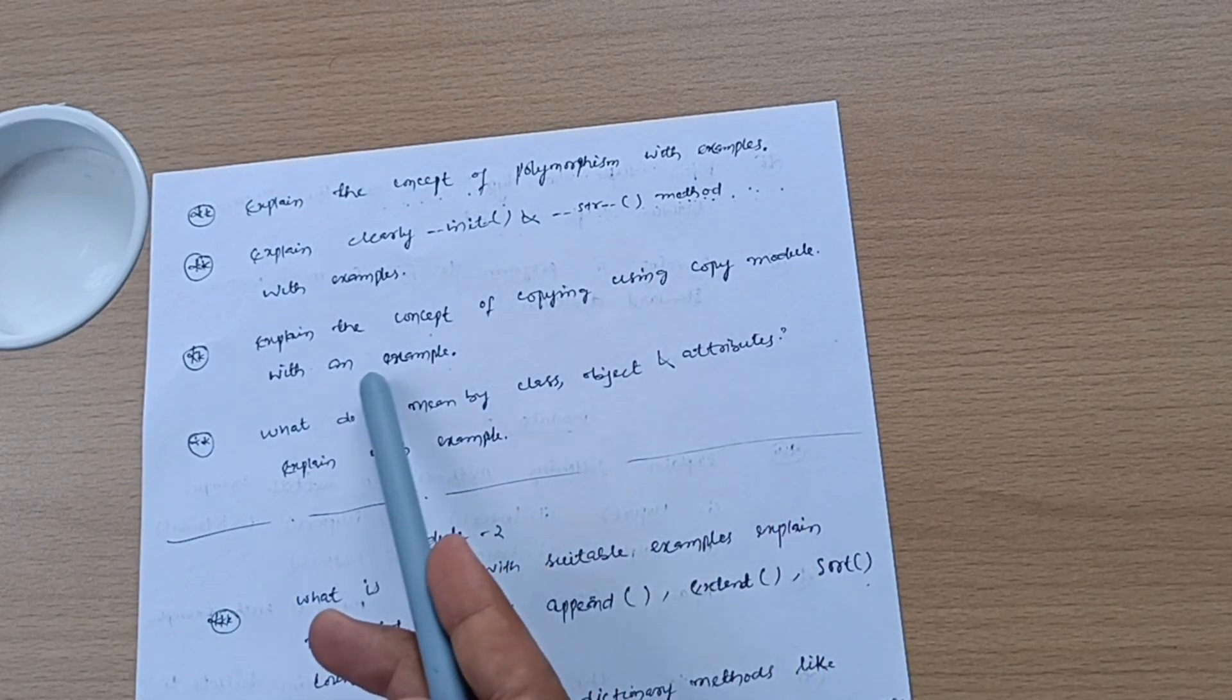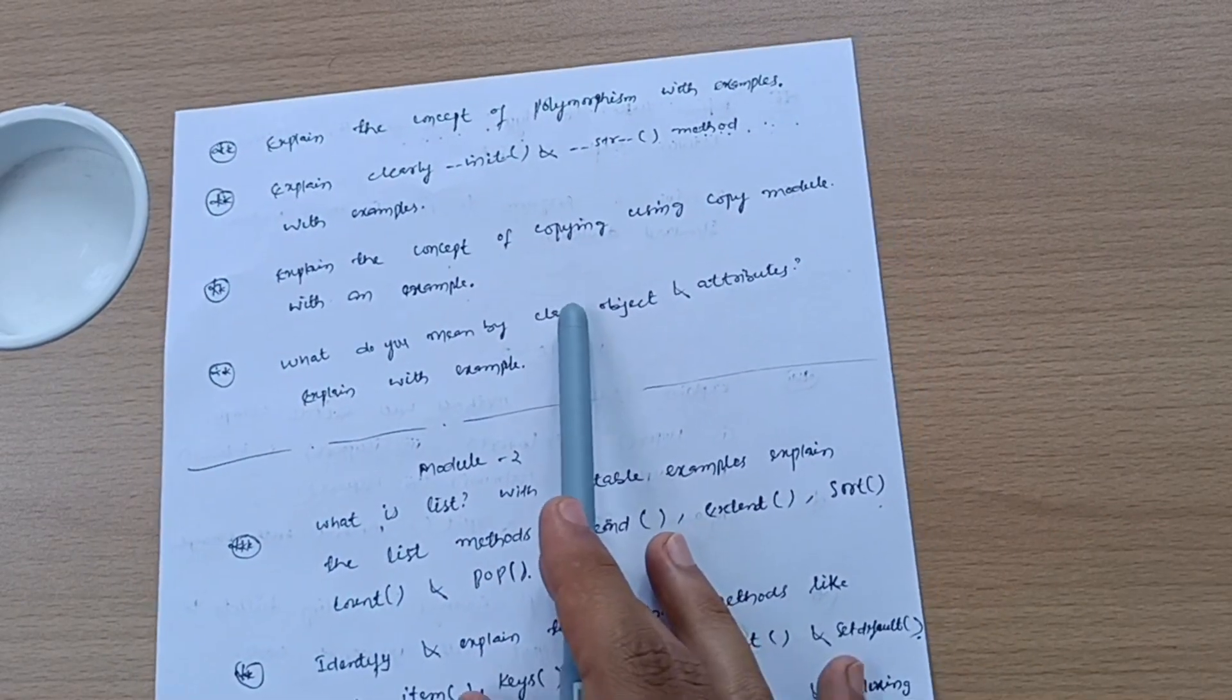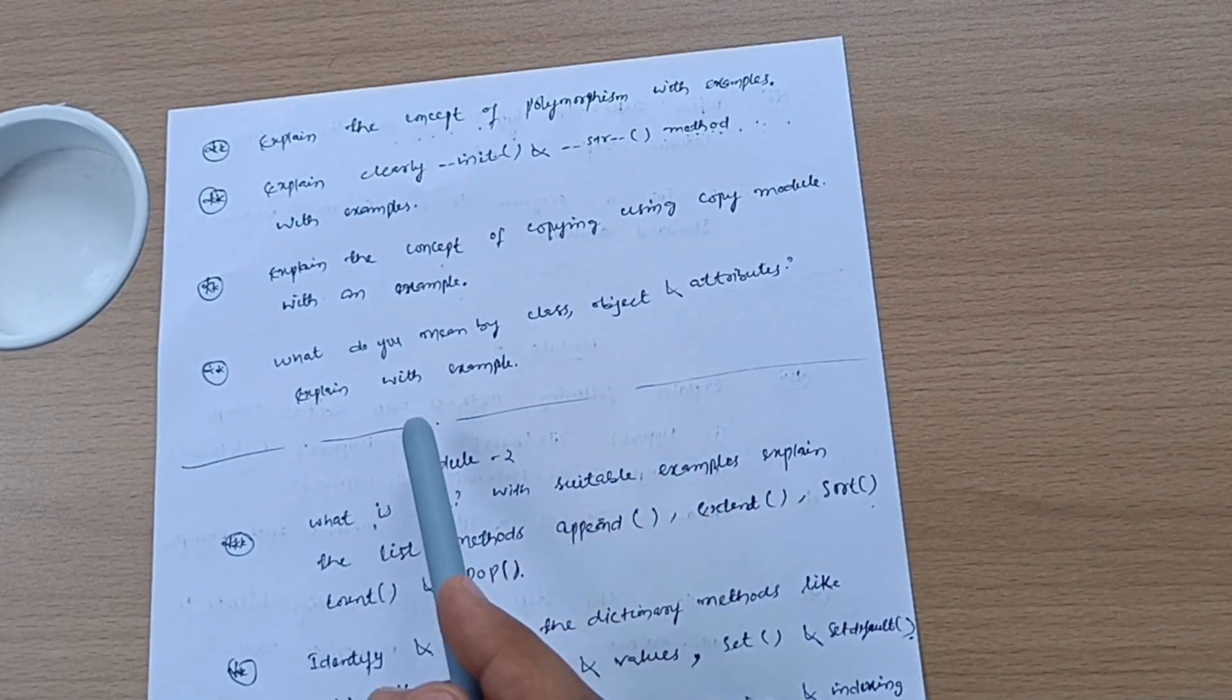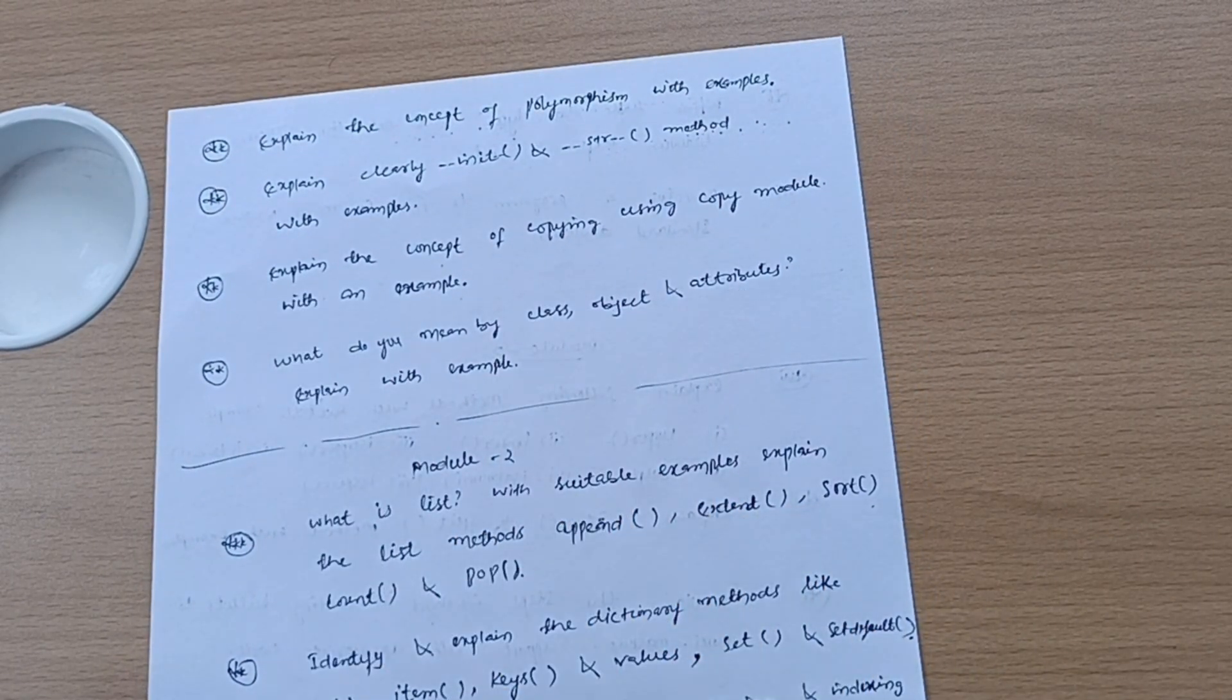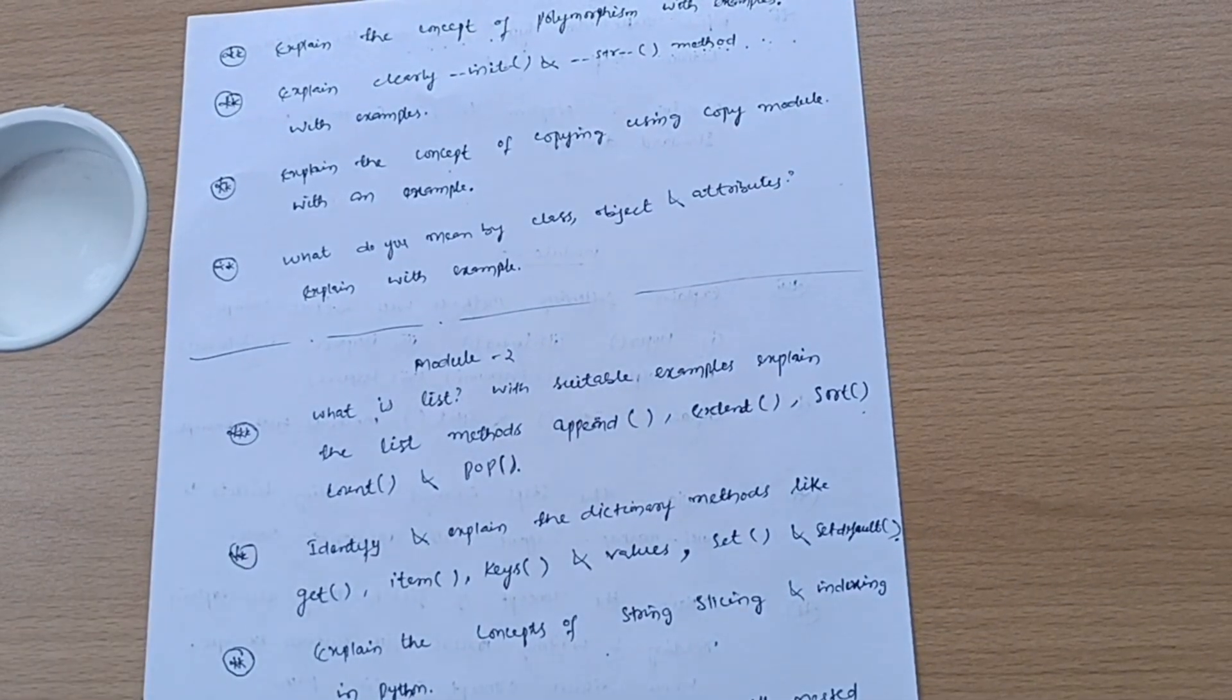Explain clearly init and str method with examples. Explain the concept of copying using copy module with an example. What do you mean by class, object, and attributes? These are theoretical concepts taken from the papers. If there are simple programs, you should refer to those ones. Next is Module 2.